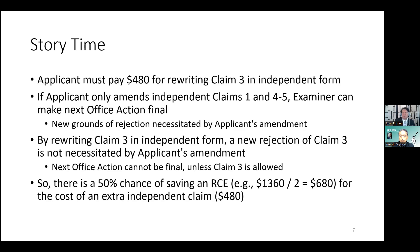So the next office action cannot be final unless Claim 3 is allowed. ですから次のOAはクレーム3が許可可能にならない限りファイナルにはなりません。 And so there's a 50% chance of saving an RCE over the course of the prosecution, which is about $680, for the cost of rewriting Claim 3 as an extra independent claim at $480. RCEには1360ドルかかるんですけれども、RCEをしなくてはならない確率を50%減らすことができます。480ドルという追加コストでそれが可能になるんです。